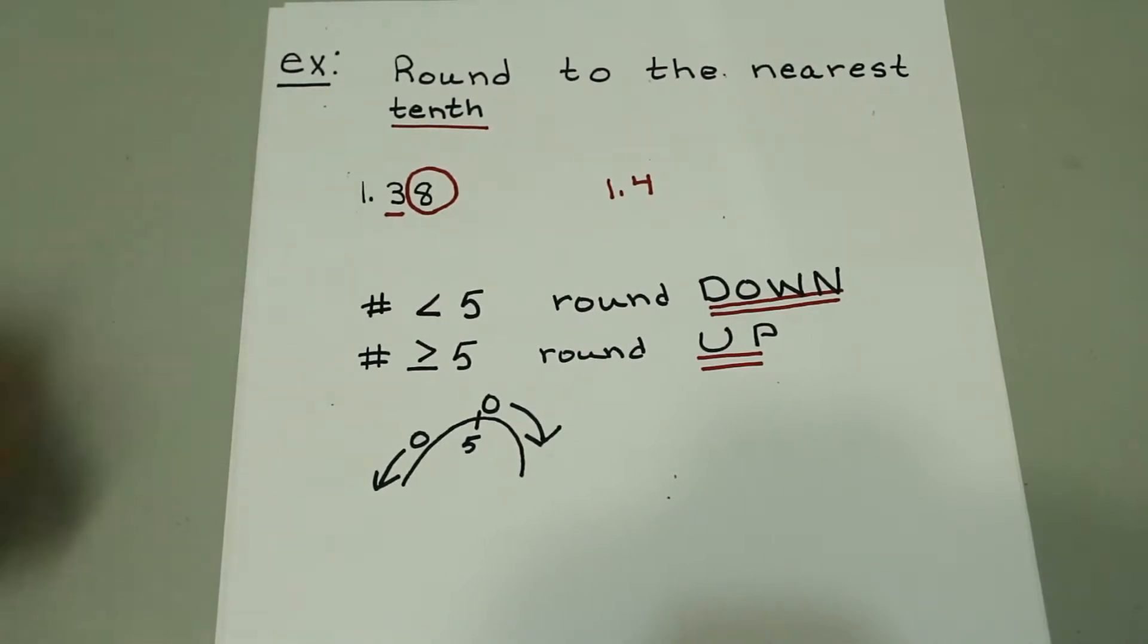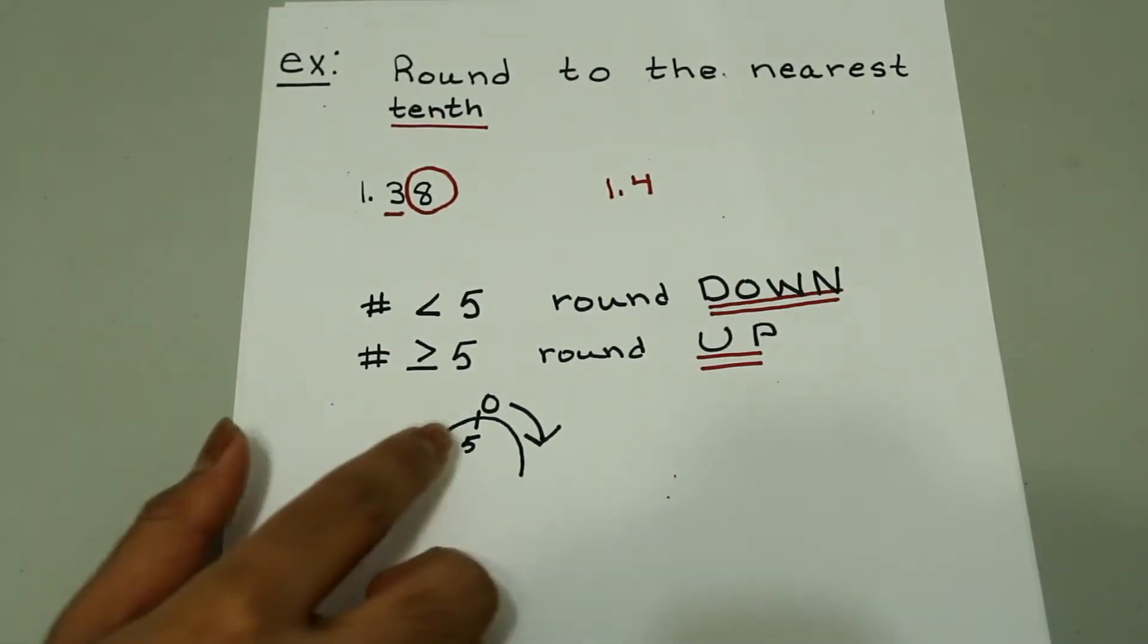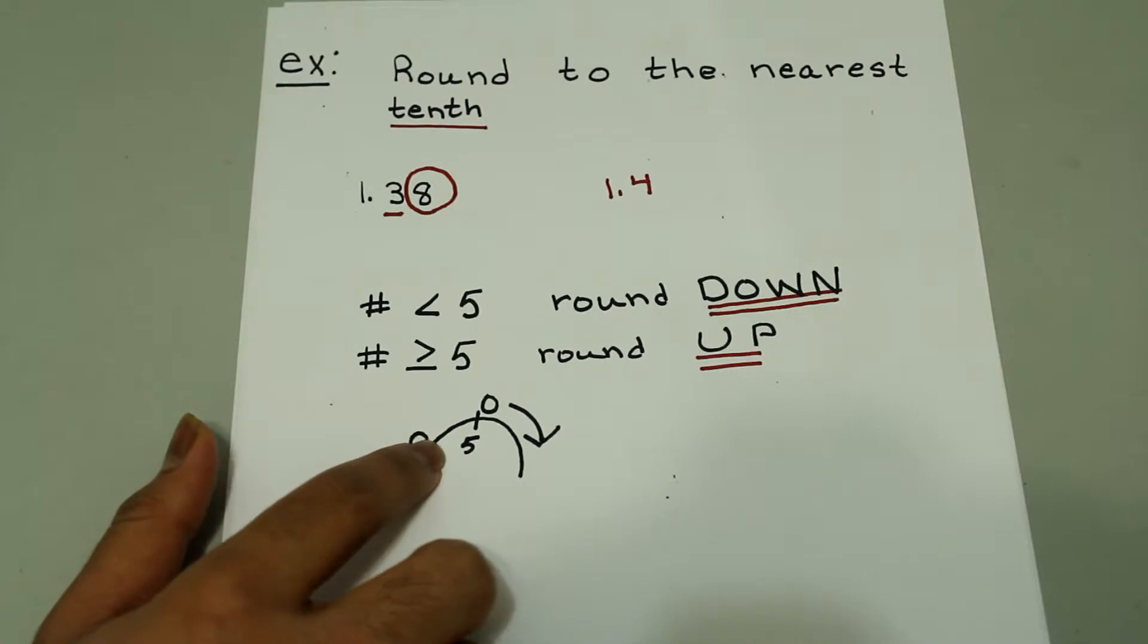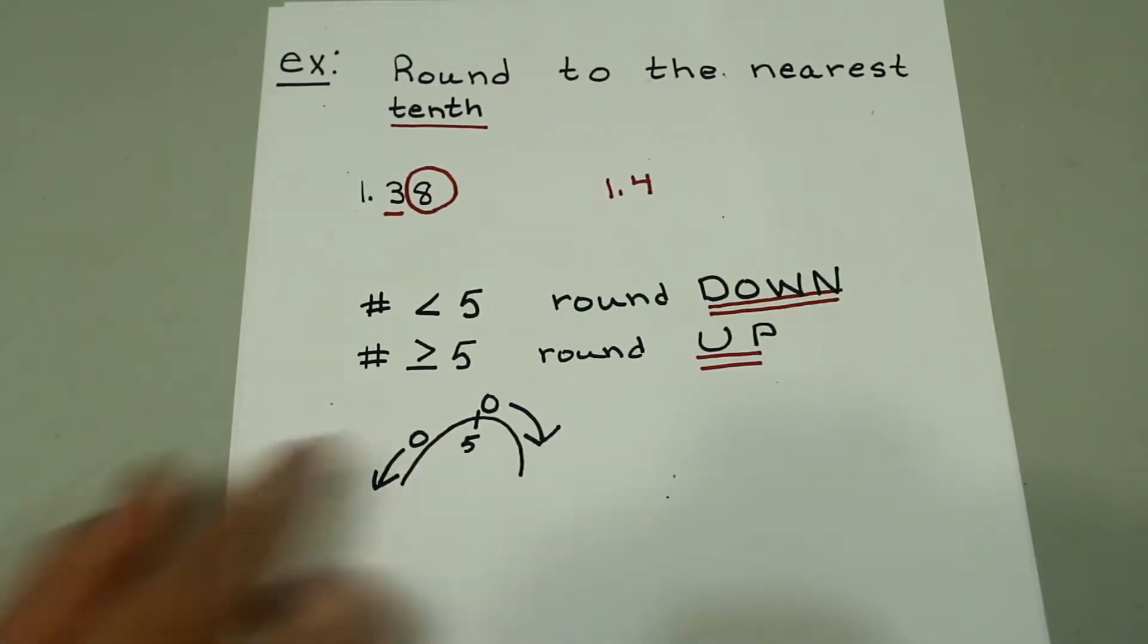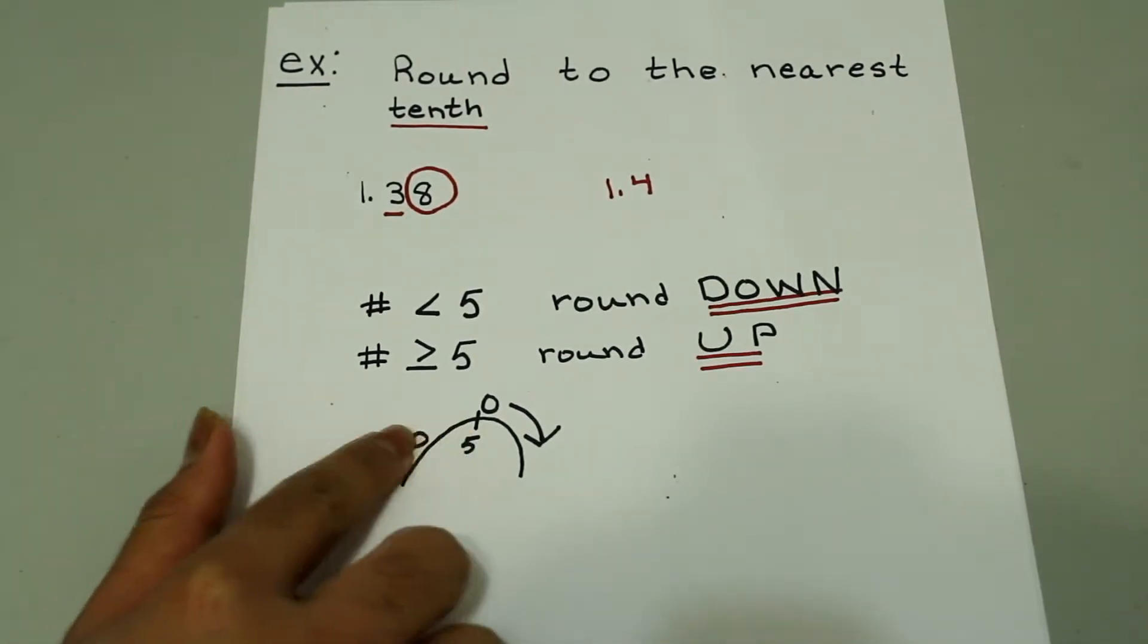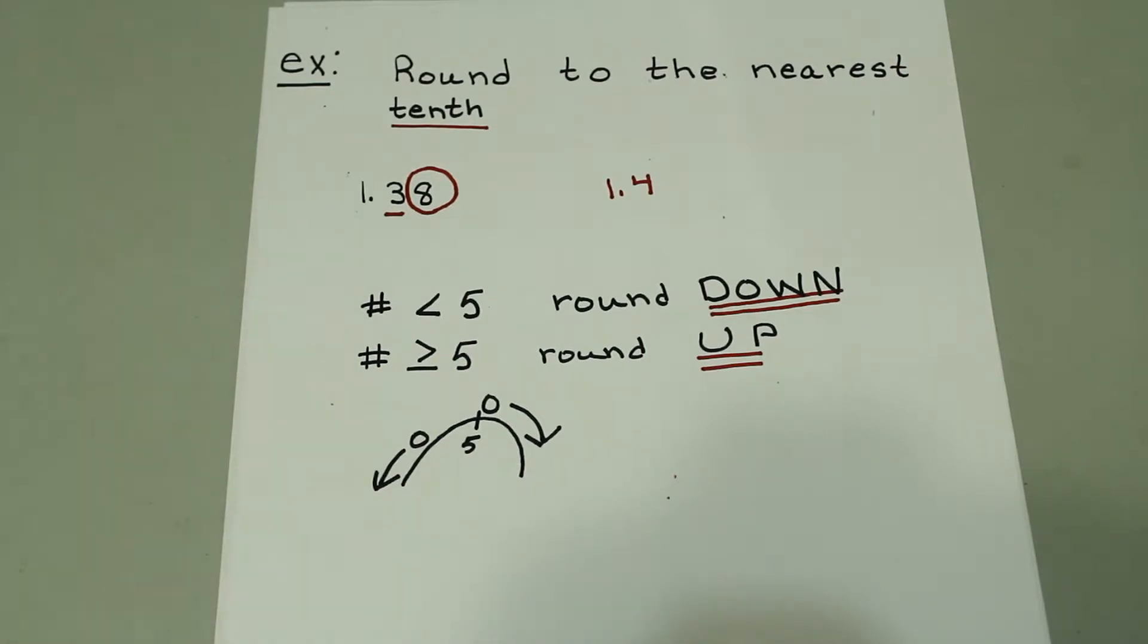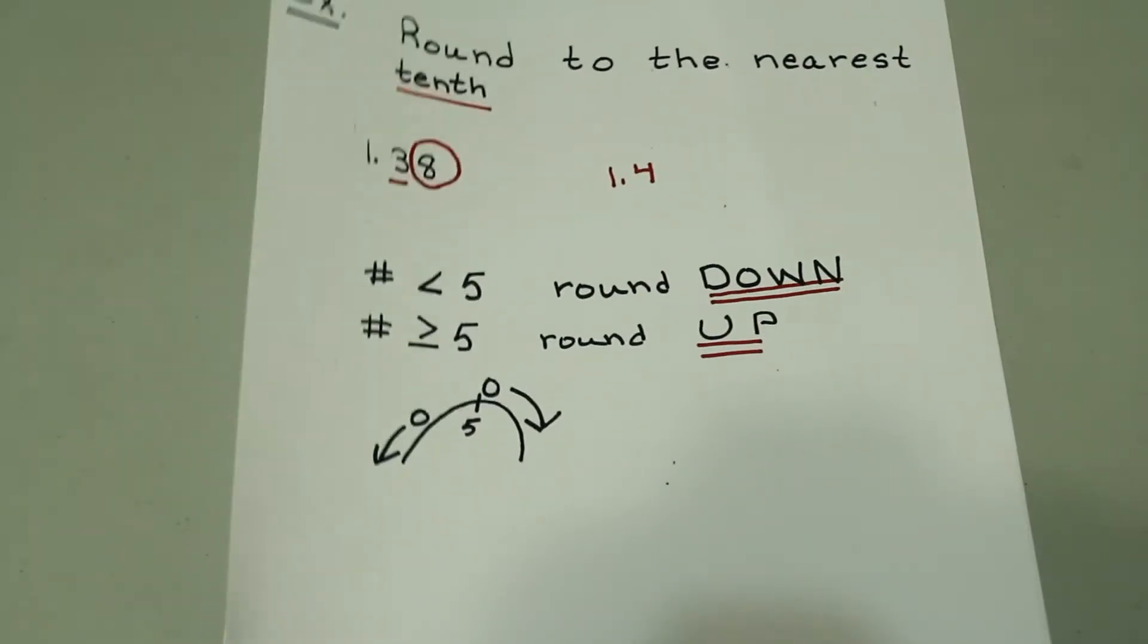So in this case, 1.38 would be rounded to 1.4. And another way to remember this is how I learned it. Think of a hill and 5 is at the top. If you roll something like a ball and you stop it anywhere before 5, it rolls back down. If it's at 5 or at any point afterwards, it's going to roll forward. So that's just a refresher on rounding. If you have any questions, be sure to comment below and I'll try to get to as many questions as possible.